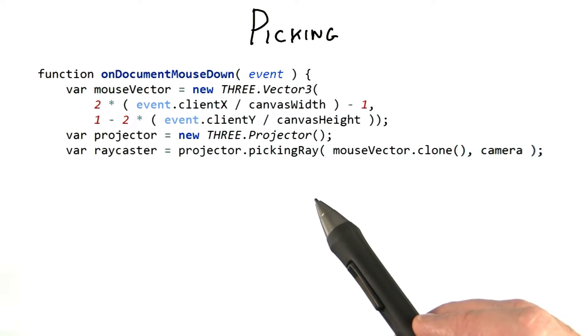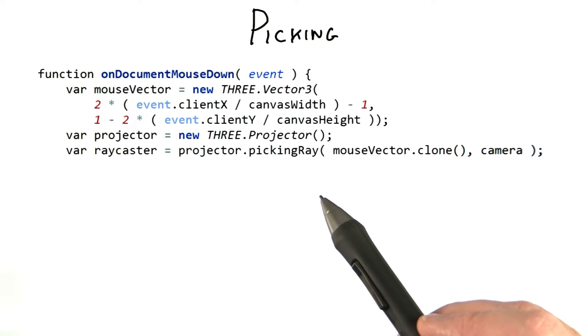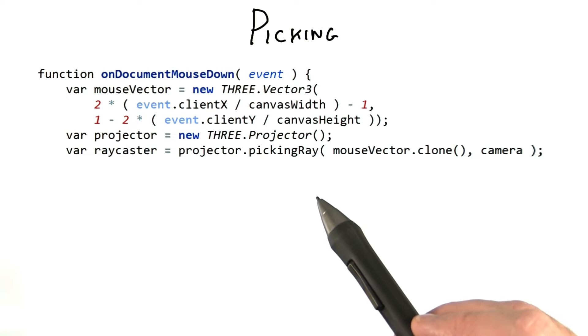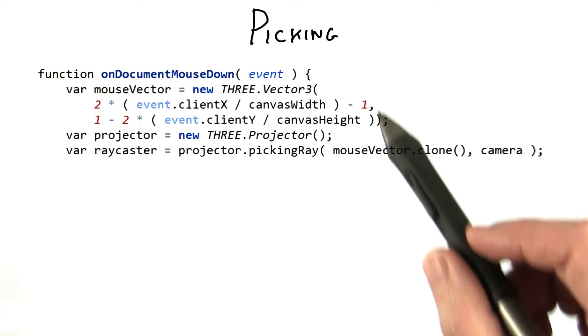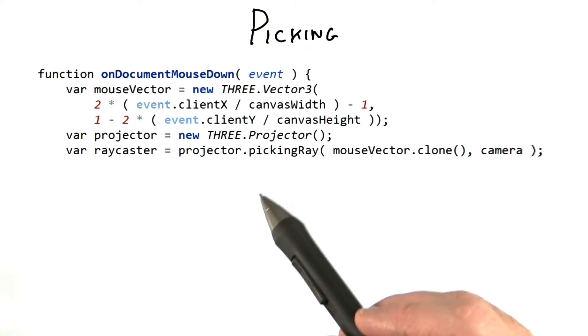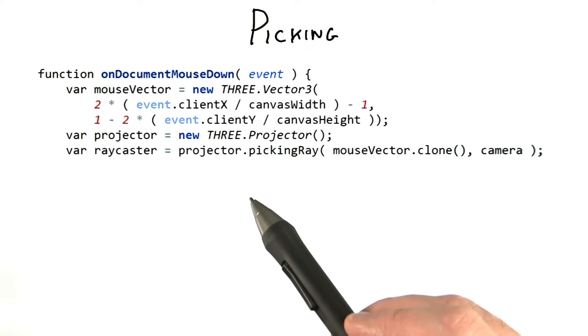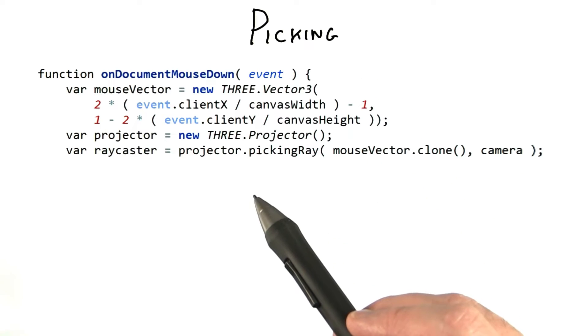Picking objects on the screen with the mouse is quite simple in Three.js. Here's the first half of the mouse down function, which sets up to perform picking.